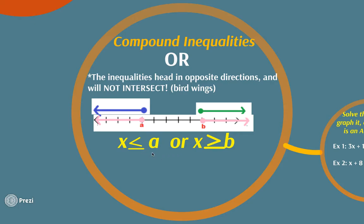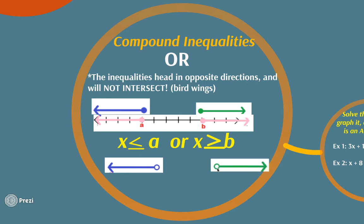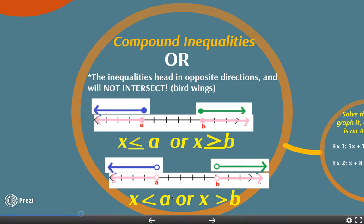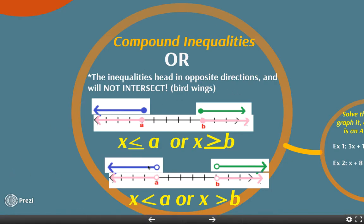With OR we break the answer apart, unlike AND where we write it all together. I like to think the arrows kind of look like bird wings — picture a bird flapping, these are both of its wings. Since the bubbles are closed, we include the equal to symbol, so these are all values less than or equal to a, or greater than or equal to b. The same applies with open bubbles: if you don't have equal to, then the answers are less than a or greater than b.